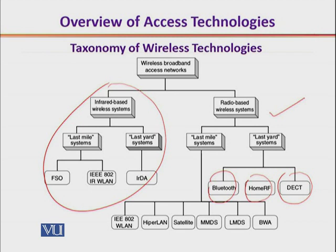On the last-mile or first-mile systems, we have Wi-Fi, HyperLAN — which is an equivalent of Wi-Fi in the European market — then we have satellite, MMDS, LMDS, and broadband wireless access. These technologies are each based on unique assumptions and a network model. In due course of time, we shall look at each of these in detail.